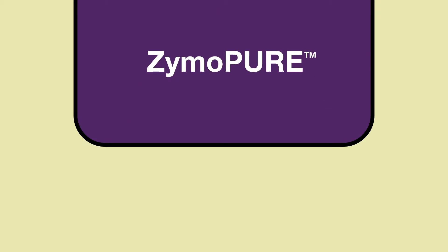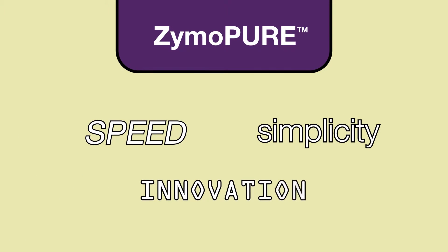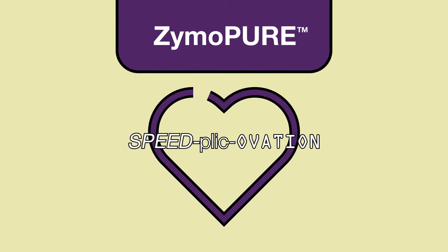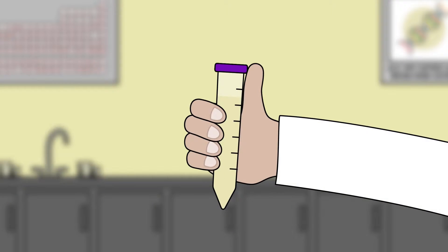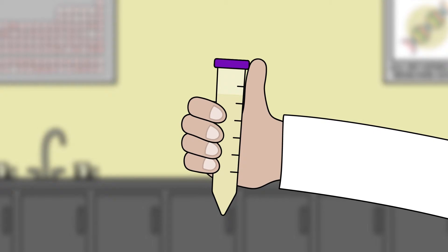As the next generation of plasmid purification, Zymopur combines speed, simplicity, and innovation. These MIDI, Maxi, and GigaPreps use a novel method of alkaline lysis, along with a new binding chemistry.